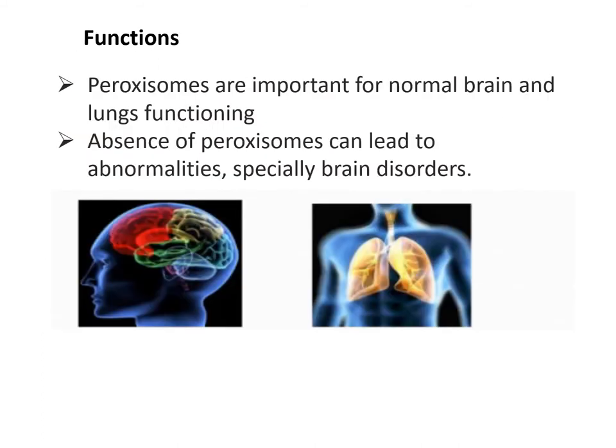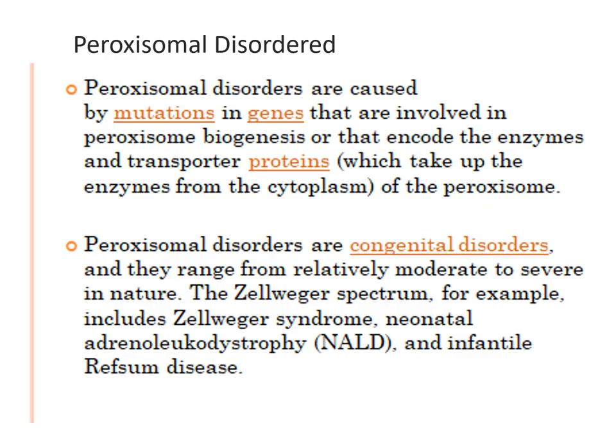Peroxisomes are important for normal brain and lung function. Absence of peroxisomes can lead to abnormalities, especially brain disorders. Peroxisomal disorders are caused by mutations in genes involved in peroxisome biogenesis or that encode enzymes and transporter proteins. These are congenital disorders — meaning present from birth — and they range from relatively moderate to severe in nature.